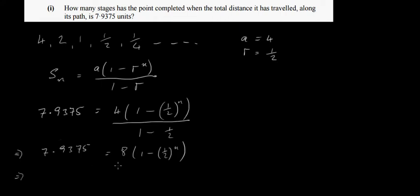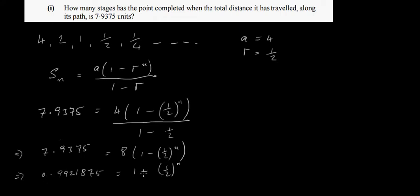Dividing both sides by 8 gives 0.99218750 = 1 − (1/2)^n. Subtracting 1 from both sides and multiplying by minus 1 at the same time — because subtracting 1 gives a negative value on this side — we get 0.0078125 = (1/2)^n.